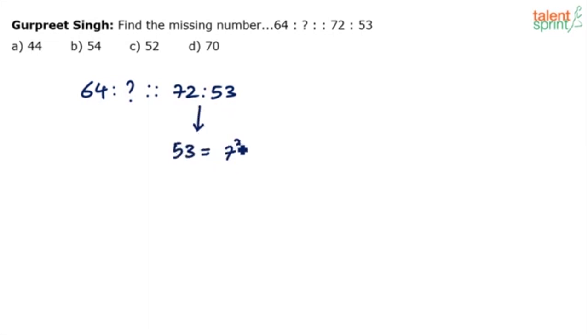So basically the explanation goes as follows: this 53 here is equal to 7 squared plus 2 squared. 7 and 2 are the digits of the first number, so 49 plus 4 is 53. In a similar way, this question mark here should be equal to what? 6 squared plus 4 squared.